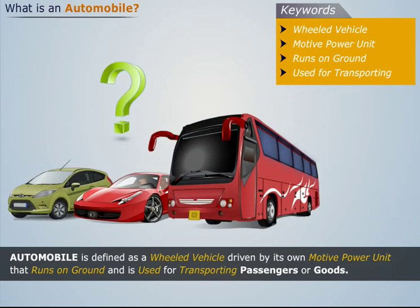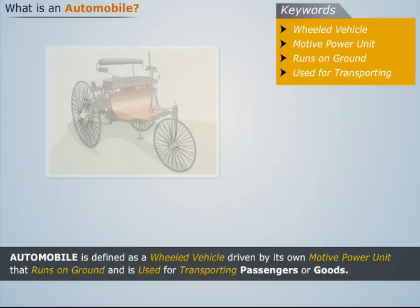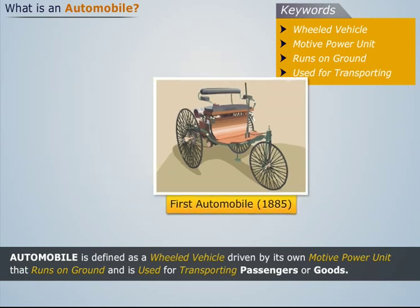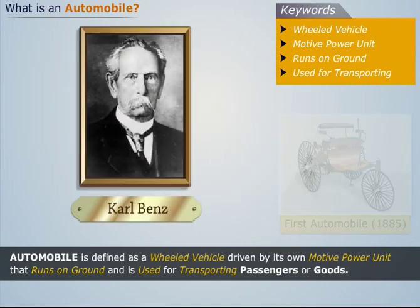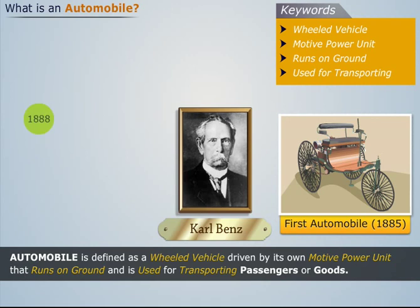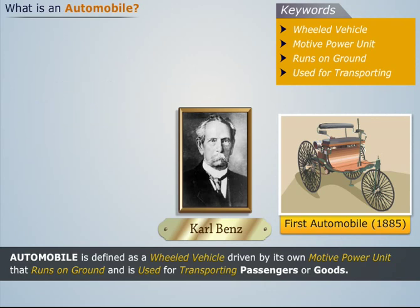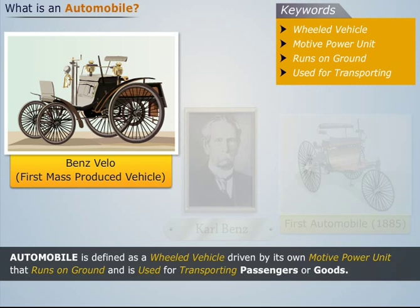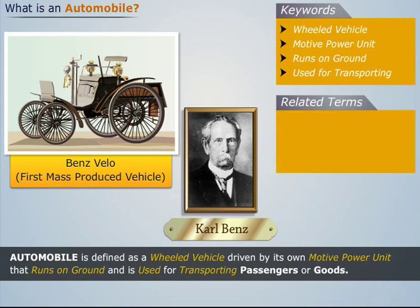Today we see a lot of different automobiles, but have you ever wondered how it all started? The world's first automobile was a petrol engine driven three-wheeled vehicle invented by Carl Benz in 1885. From 1888 to 1893, around 25 such vehicles were sold. Then in 1894, Benz produced the Benz Velo, which was the first automobile to be mass-produced.